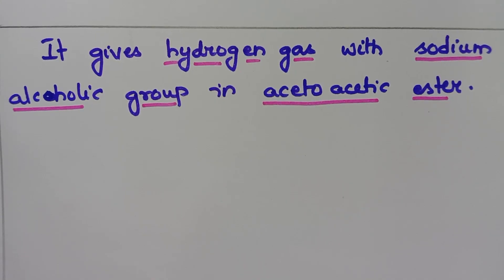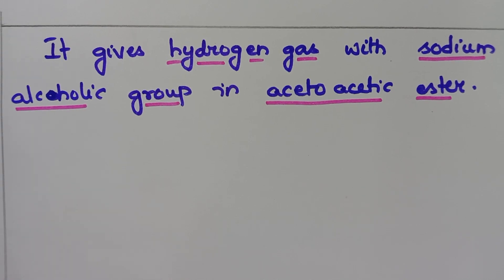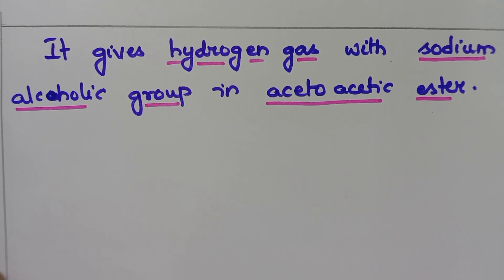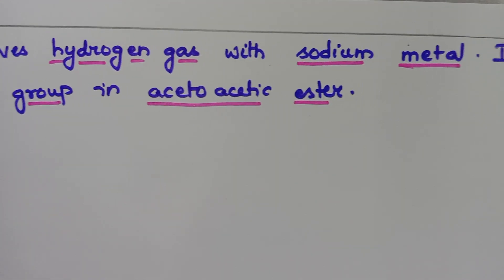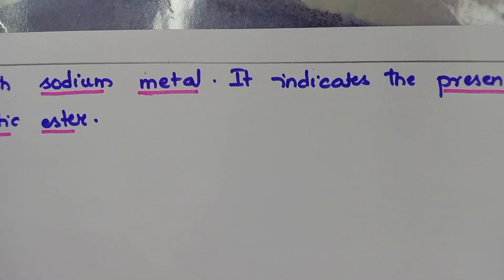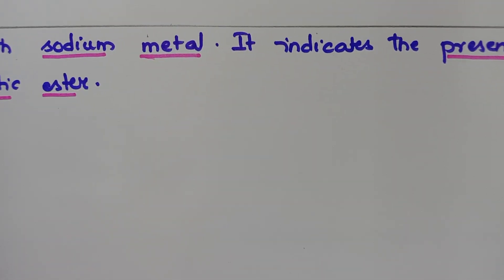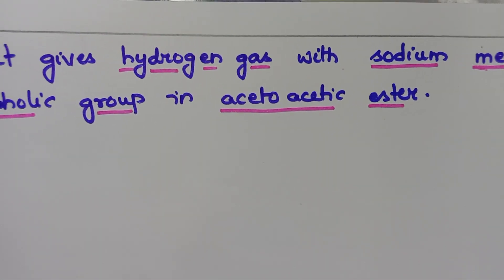For evidence of the OH group specifically: when acetoacetic ester is treated with sodium metal (Na), hydrogen gas is liberated. This indicates the presence of an alcoholic group in acetoacetic ester, further confirming the enolic form.